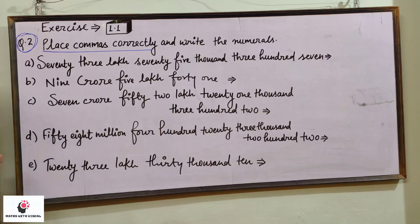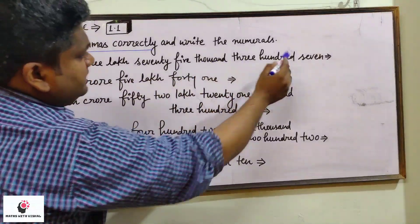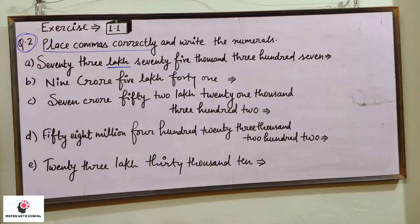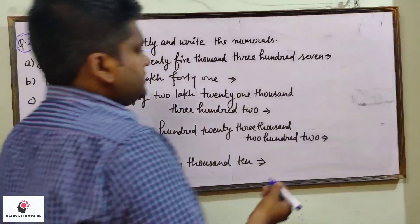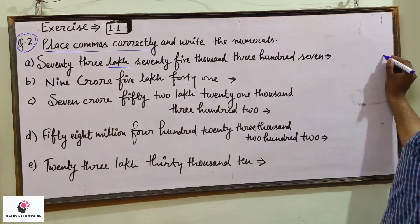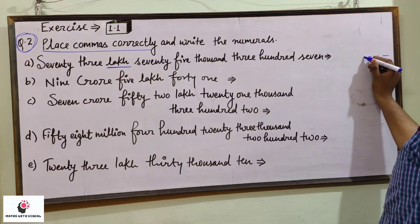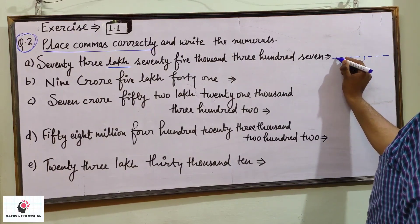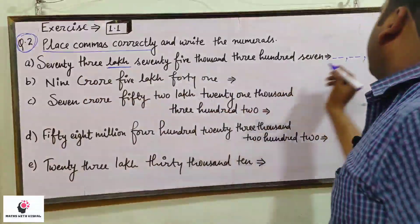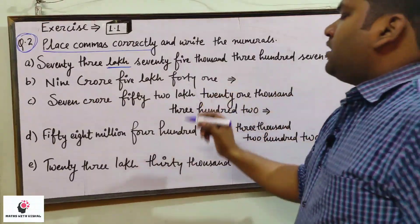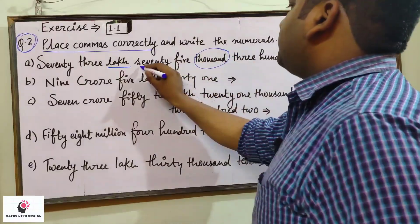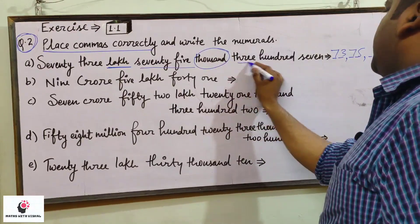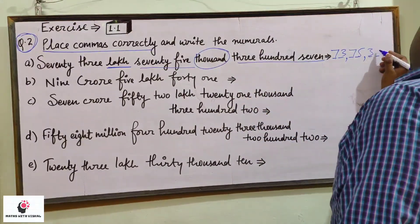The first number is seventy-three lakh seventy-five thousand three hundred seven. The number is reaching up to lakh, so let us start making dots: ones, tens, hundreds, thousands, ten thousands, lakh, ten lakh. The number is seventy-three lakh, so at the lakh place it will be 73. Then seventy-five thousand, so in the thousand place it will be 75, and three hundred seven, so 3, 0, 7.